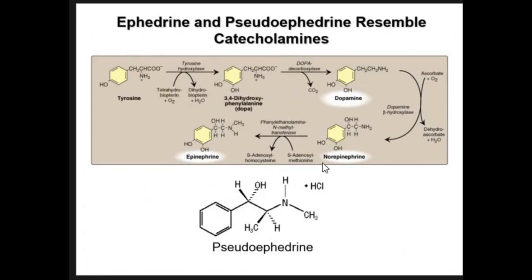If we compare the structure of pseudoephedrine with norepinephrine, you can see that the benzene ring has two OH groups, whereas in pseudoephedrine there is a hydroxy group missing. Comparing the beta carbon, we have H and OH both, but the orientation is a little different compared to norepinephrine. On the alpha carbon, norepinephrine has hydrogen and hydrogen, while pseudoephedrine has a methyl group.